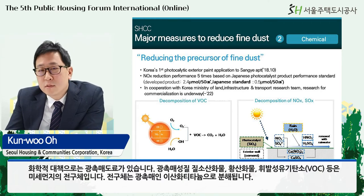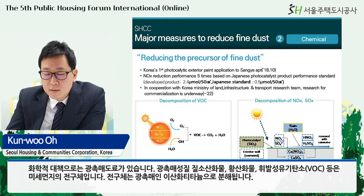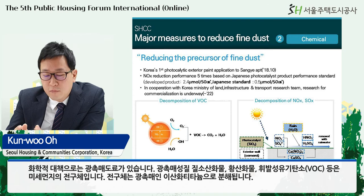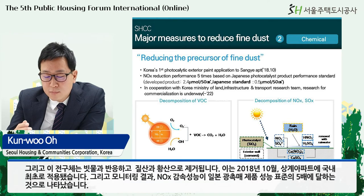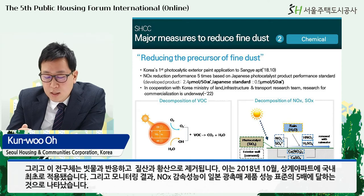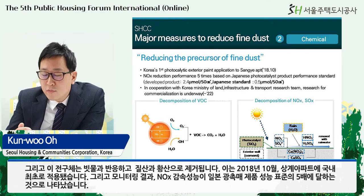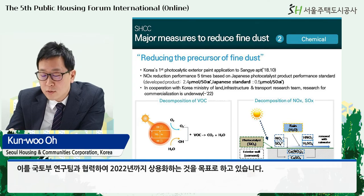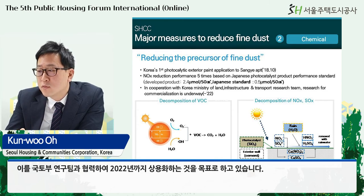As a chemical measure, there is a photocatalytic paint that decomposes nitrogen oxide, sulfur oxide, and VOC — volatile organic compounds — which are precursors of fine dust. The paint is composed of titanium dioxide, a photocatalyst, and the precursors react with rainwater and are removed as nitric acid and sulfuric acid. It was applied for the first time in Korea at Sangell Apartments in October 2018, and monitoring results showed five times the maximum reduction performance of Japanese photocatalyst product standards. It is being promoted with the goal of commercialization by 2022 in cooperation with the Korean Ministry of Land, Infrastructure and Transport Research Team.